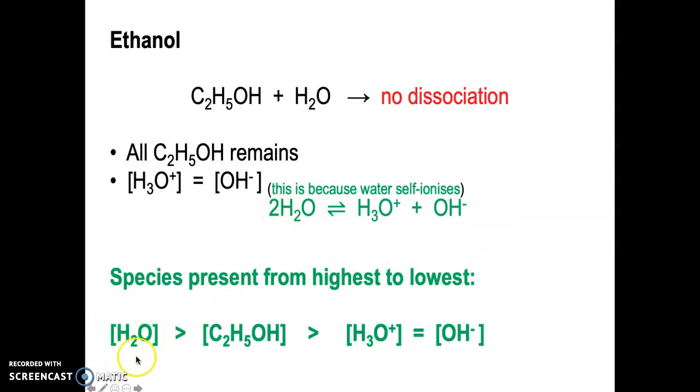The most common species would be water—remember that is 55.6 moles per liter. Because ethanol does not dissociate, it remains intact as the next highest concentration. From there, you typically write the hydronium ions on the left and the hydroxide ions on the right. Their concentrations are very small.